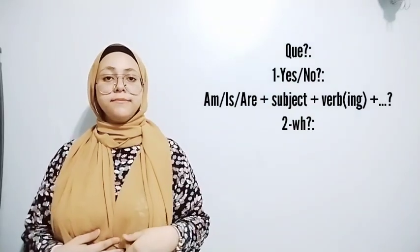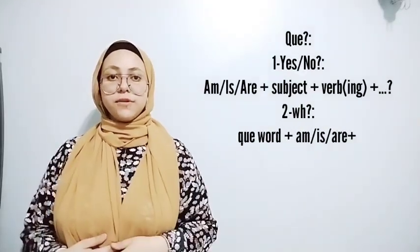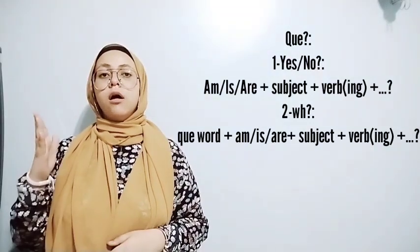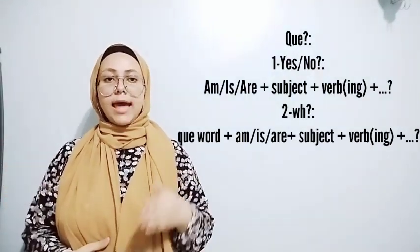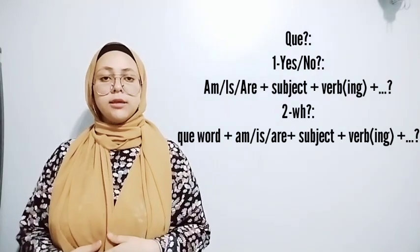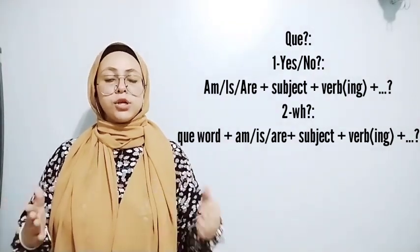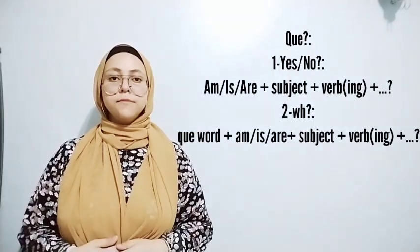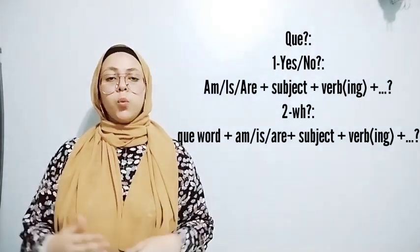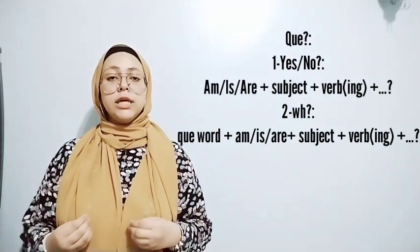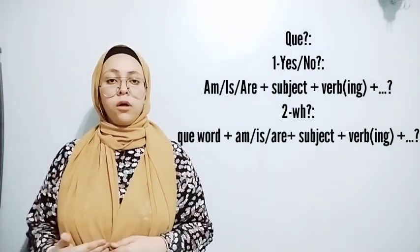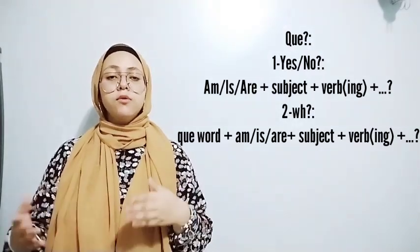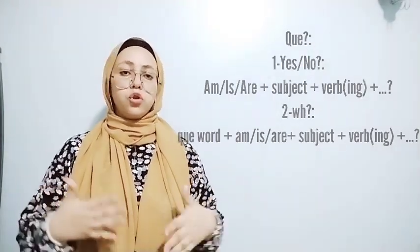For questions, we have two types. For yes/no questions, we ask with are, am, or is, plus the subject, plus the verb with -ing, plus the rest of the sentence, plus the question mark. For WH questions, we add the question word, then am, is, or are, plus the subject, plus the verb with -ing, plus the rest of the sentence, plus the question mark.